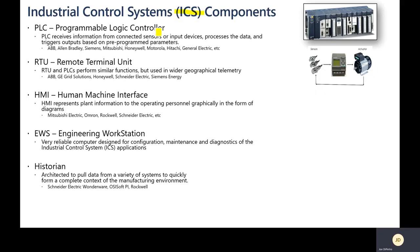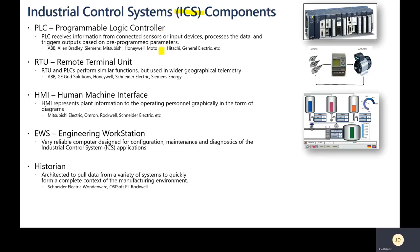Very similar to a PLC is a Remote Terminal Unit, or RTU. An RTU is used similarly to a PLC but is used in wider geographical telemetry, allowing you to spread these things out more from a geographical perspective. Then we have the HMI — the human machine interface — which gives you a graphical representation of the process controls that are going on. As you see in this diagram, tanks are being filled with temperature and pressure sensors. It gives you a graphical user interface so it's easy to understand the processes from a monitoring perspective.